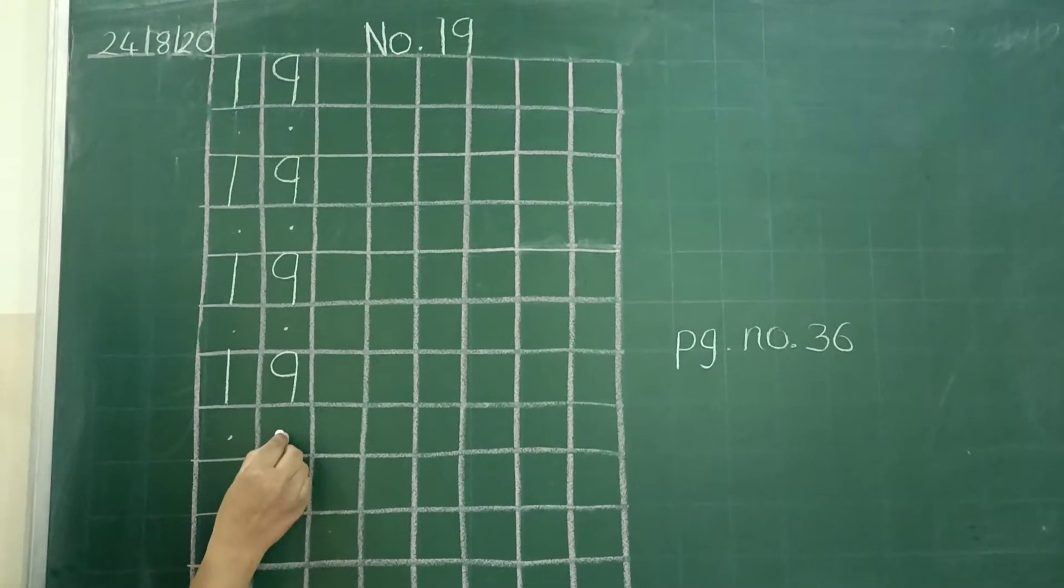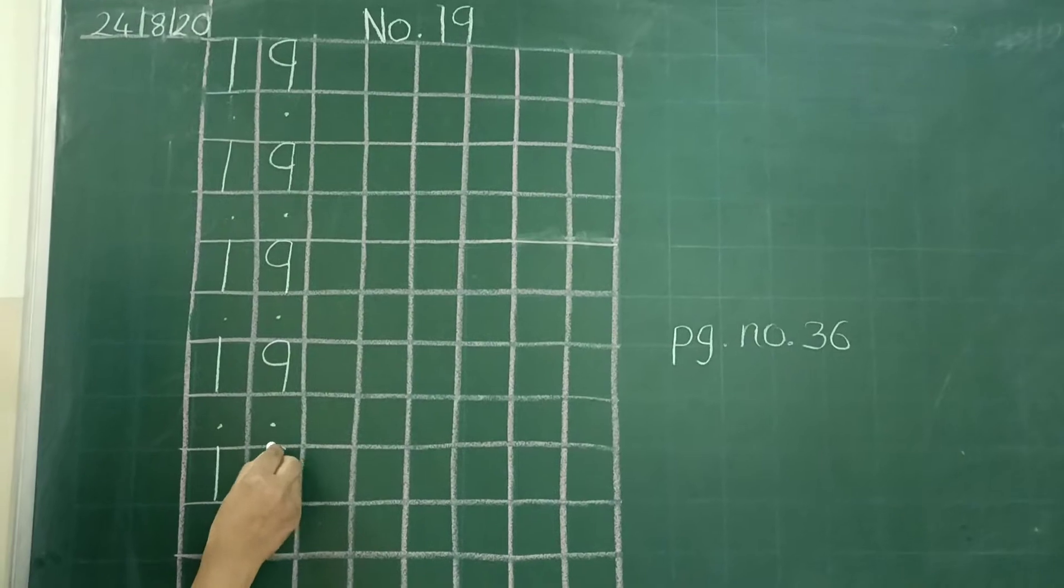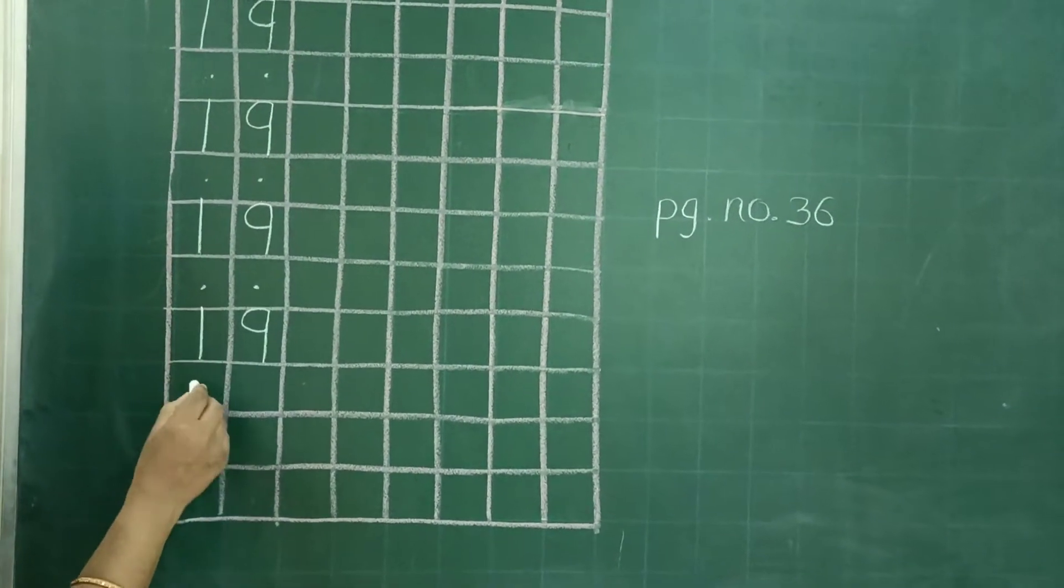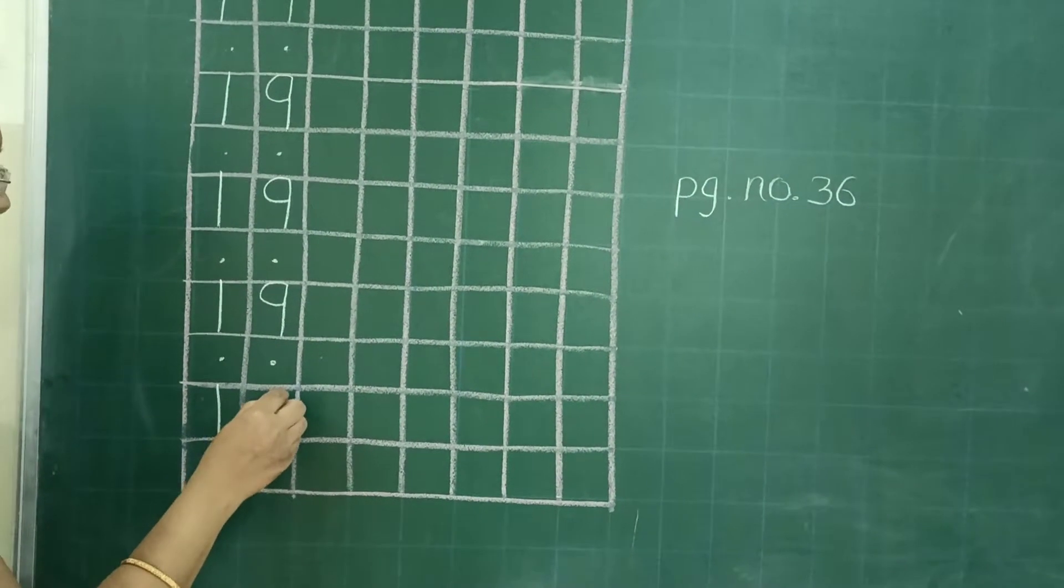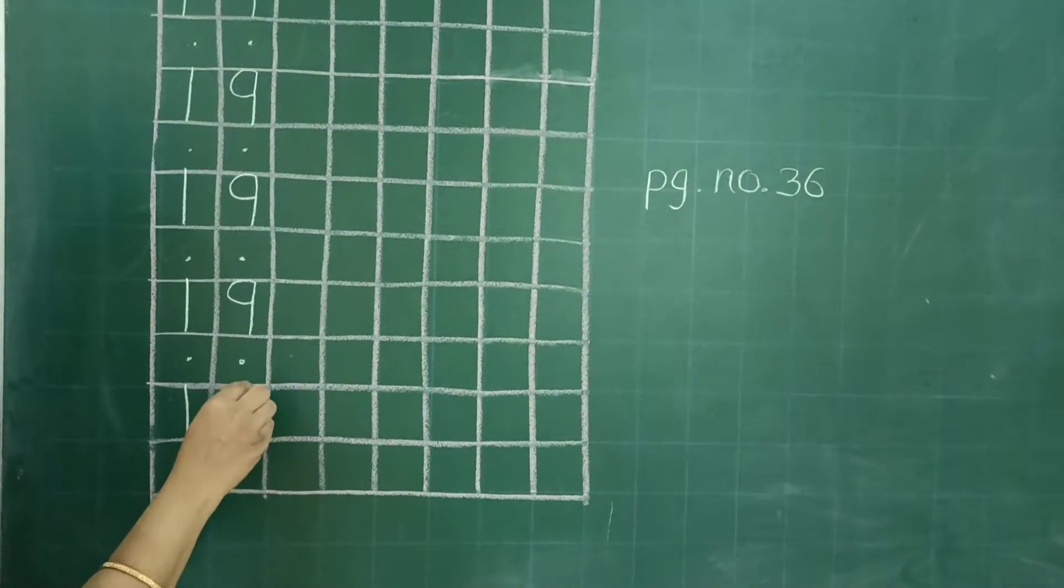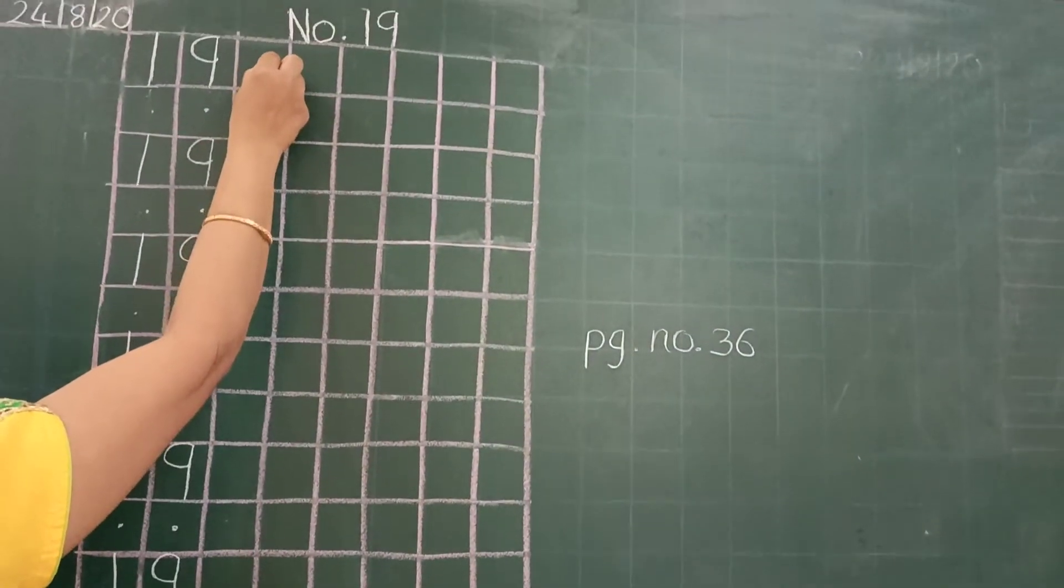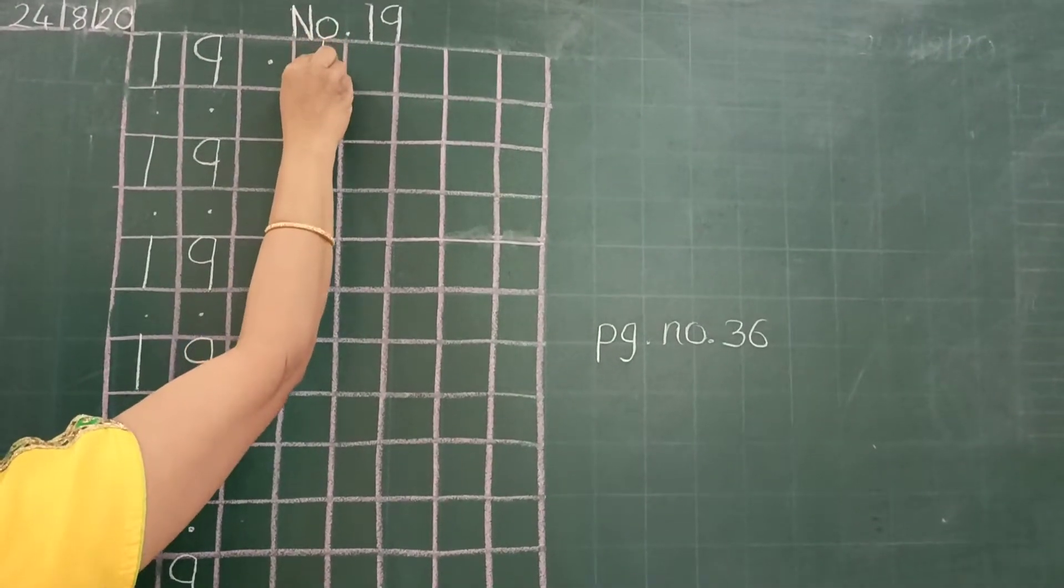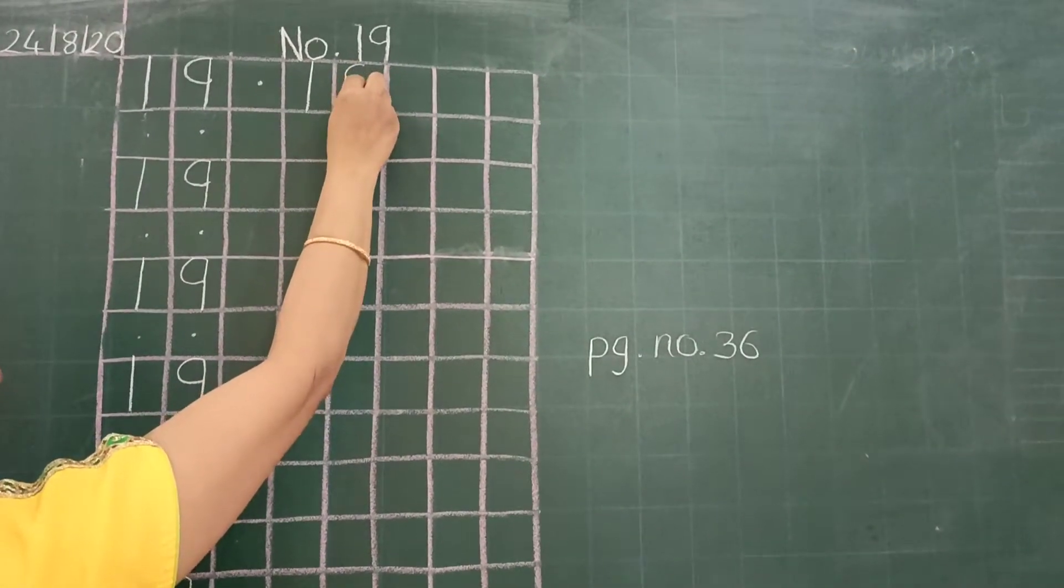Every time you have to leave these 2 boxes and write again number 1, 9, 19. Then again leave these 2 boxes and write here 1 and 9, 19. For writing these numbers from 11 onwards, what is necessary is that you must know numbers up to 10. First do practice of writing numbers from 1 to 10.